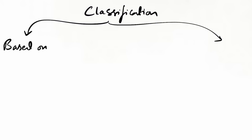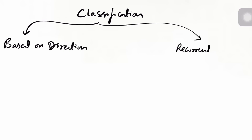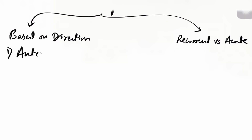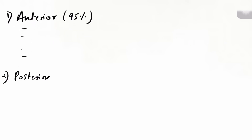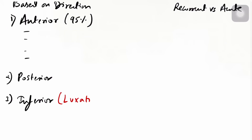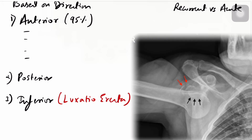The classification of shoulder dislocations has two main categories: one is based on the direction of dislocation, and the other is recurrent versus acute. Based on direction, anterior is the most common at 95%, followed by posterior, and then inferior — also called 'Luxatio Erecta.'